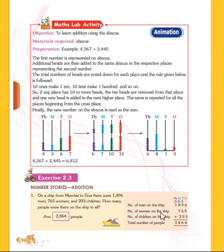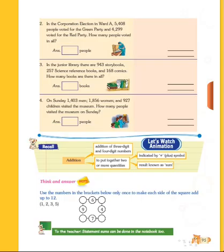Now turn the page. Here also we have number stories. See the second one: in the Corporation Election in Ward A, 5,408 people voted for the Green Party and 4,299 voted for the Red Party. How many people voted in all? We have to find the total votes.